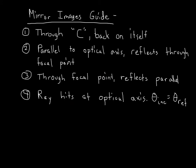We can solve mirror problems using ray diagrams with the following guide. The first ray goes through the center of curvature and right back on itself. The second ray is parallel to the optical axis and reflects through the focal point. The third ray goes through the focal point and reflects back parallel. The fourth ray hits at the optical axis, and we recognize that theta incident equals theta reflected.